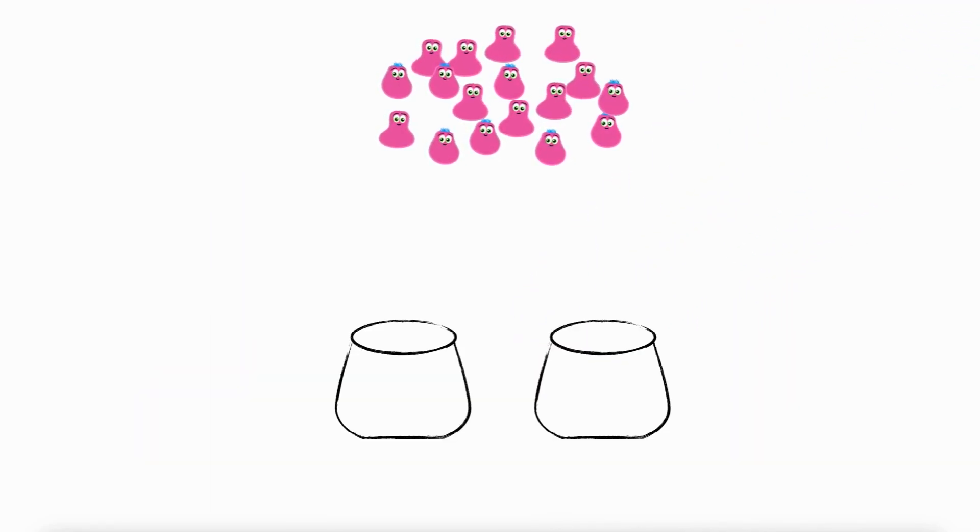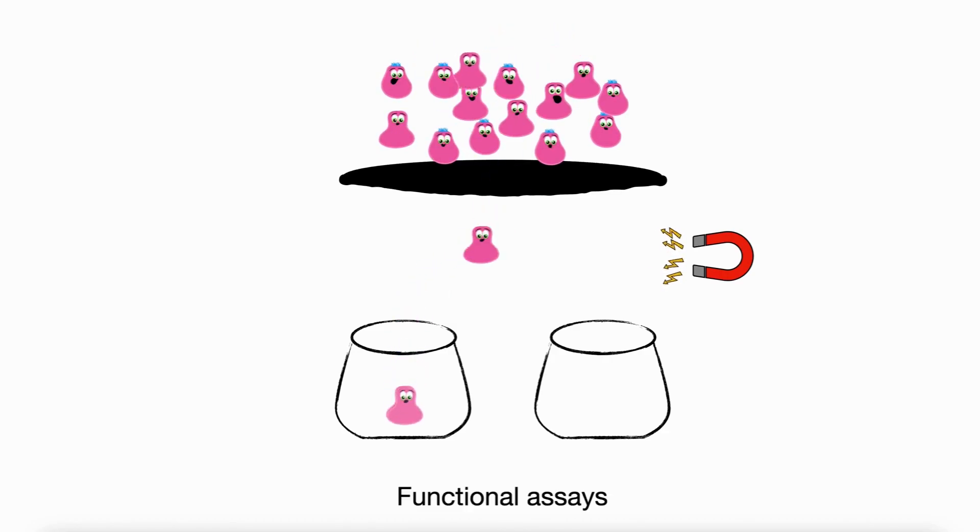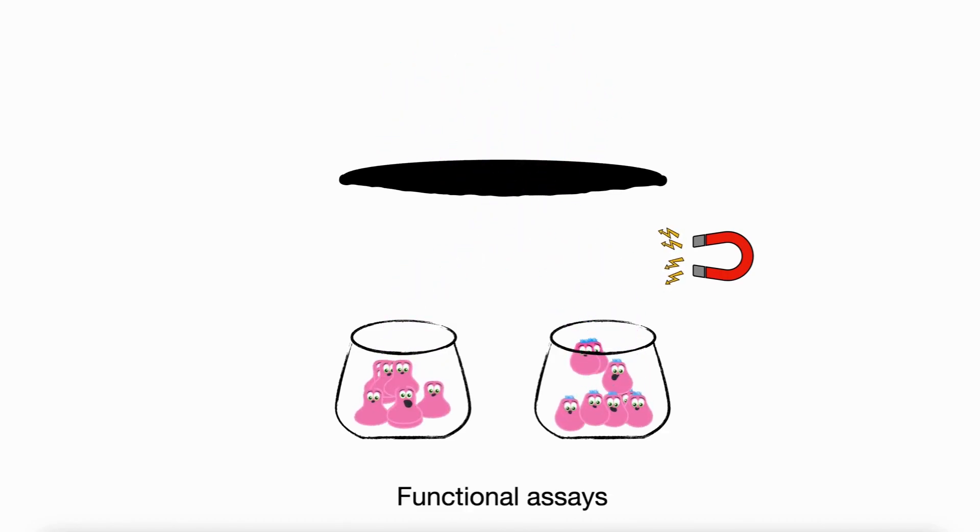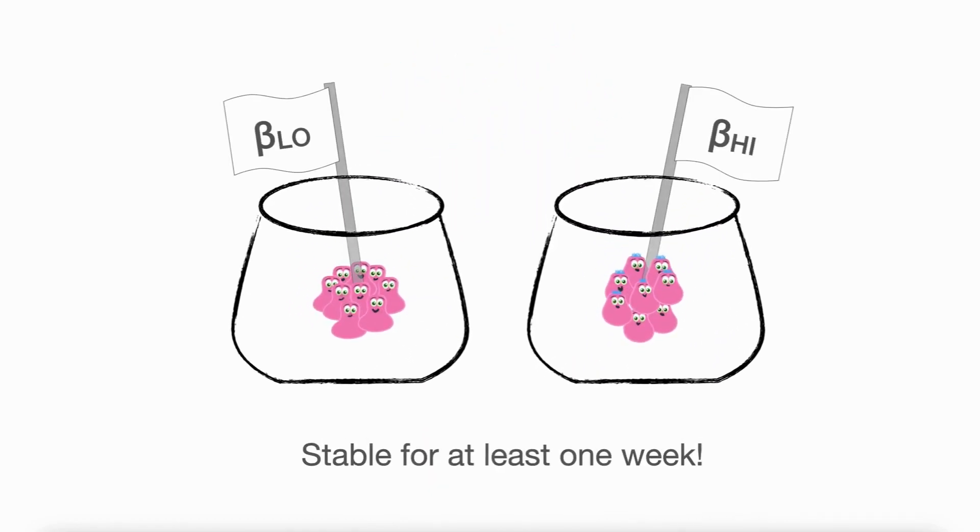Importantly, we saw these subtypes in both mouse and human cells. We also found that beta high cells are increased in number in people with type 2 diabetes.